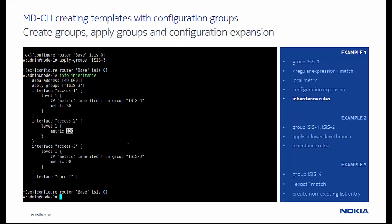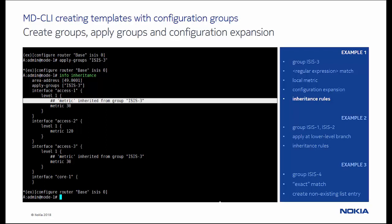Secondly, notice that interface core 1 did not inherit anything, since the interface name did not match the regular expression. Also, we see that the other two access interfaces inherited metric 30 from the configuration group isis3, and the annotation is added on the line before the inherited configuration statement.